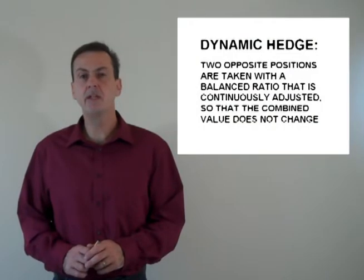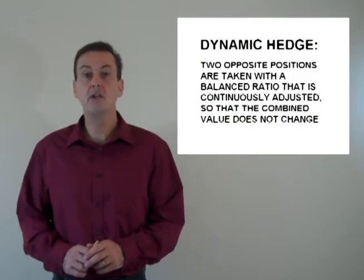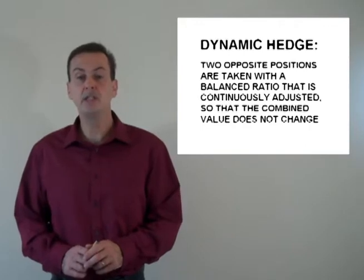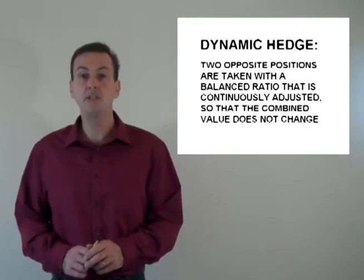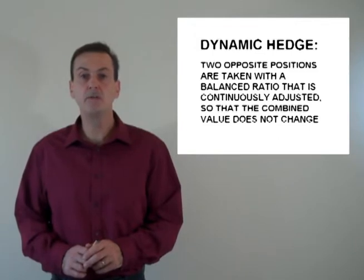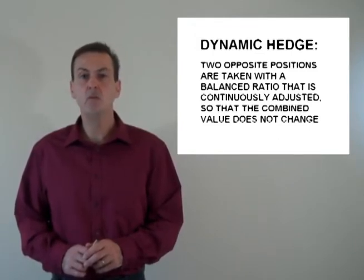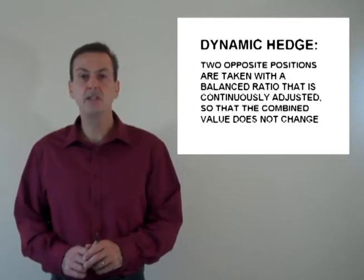To prove this theory, Black and Scholes, along with the help of Robert Merton, developed something known as a dynamic hedge — a theoretical way to remove all risk by taking two opposite positions in the market in such a way that both positions are perfectly hedged. In other words, when the market moves, one position increases in value the exact amount that the other position decreases in value, and the total value of both positions never changes.